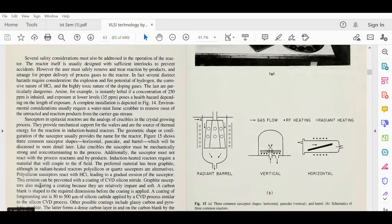Graphite susceptors also require a coating because they are relatively impure and soft. A carbon blank is shaped to the required dimensions before the coating is applied. A coating of long-standing use is 50 to 500 micrometers of silicon carbide applied in the CVD process similar to the silicon CVD process.